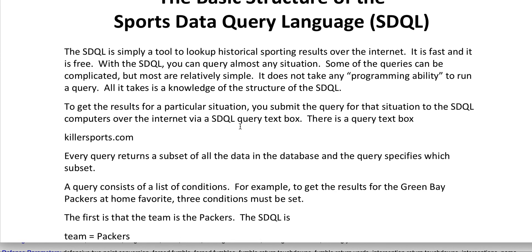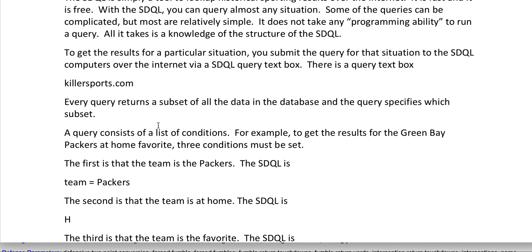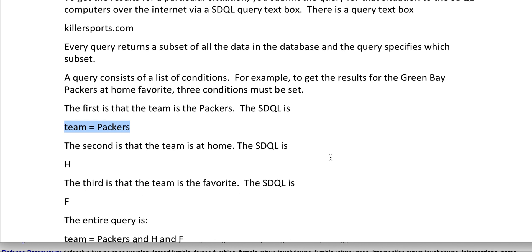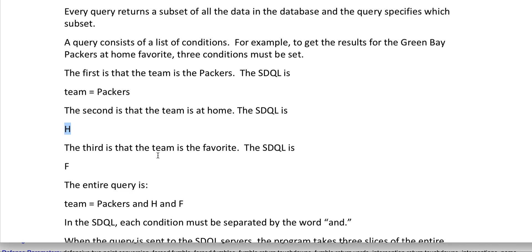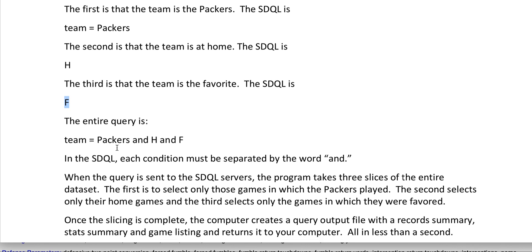The query that we're going to run is the Packers as a home favorite — a very simple query. There are three conditions that must be met. First, we have to set the team to the Packers; the SDQL for that is 'team equals Packers.' The second is that the team is at home; the SDQL for that is the capital letter H. The third is that the team is the favorite; the SDQL for favorite is a capital F. To get the entire query, you string together the three conditions with the word AND: team equals Packers AND H AND F.